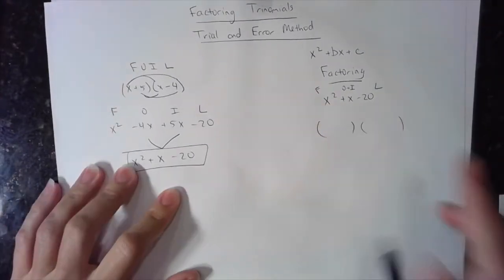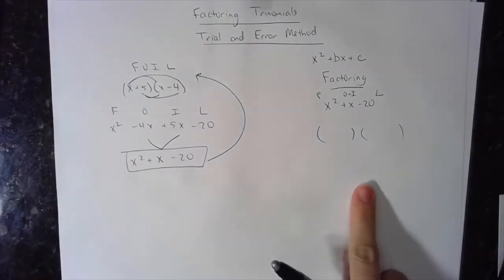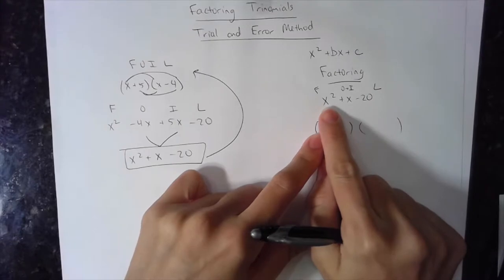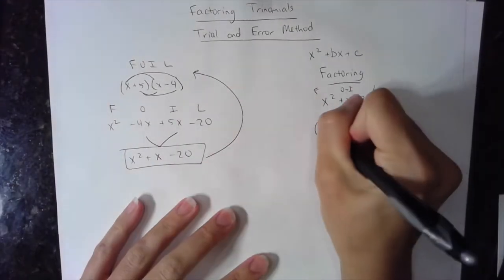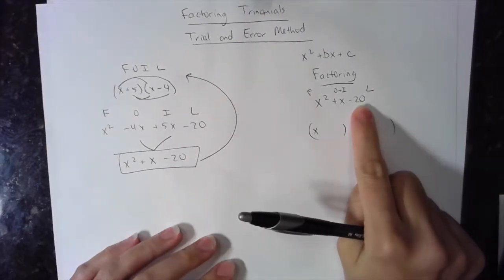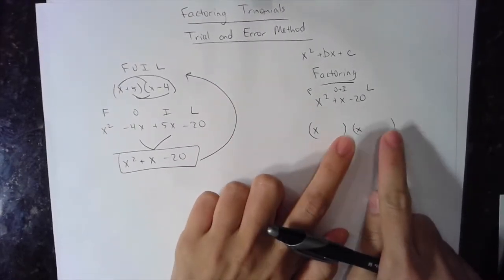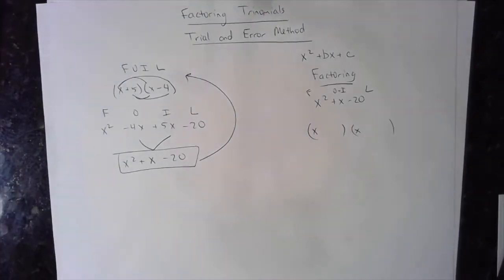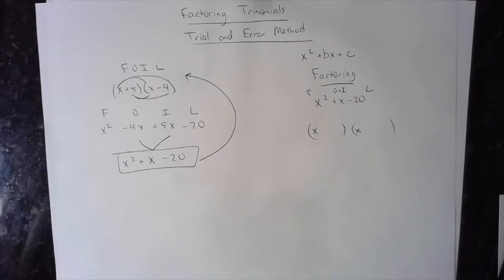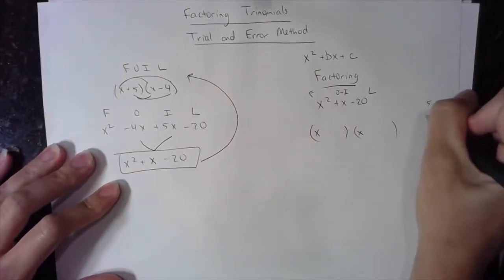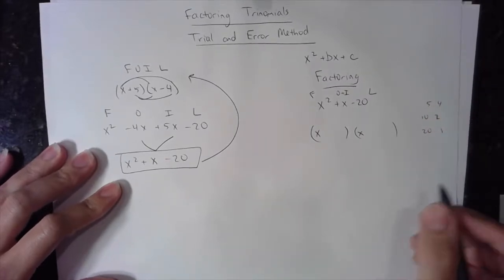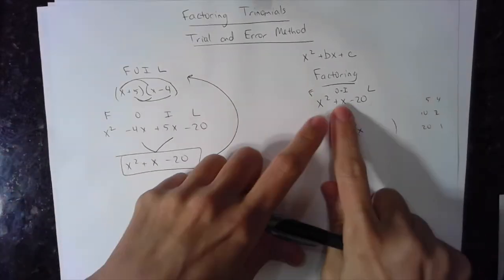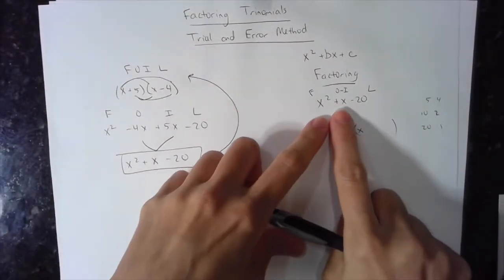Going in the opposite direction — factoring — if the first two terms have to multiply to give x squared, I place x times x. If the last part of FOIL is the product giving me this last term, I have to pick factors of negative 20. Factors of 63 include 10 and 2, 5 and 4, 20 and 1 — a bunch of different combinations. To determine which to use, I think about which combination will make the outer and inner parts of FOIL combine to give positive 1.